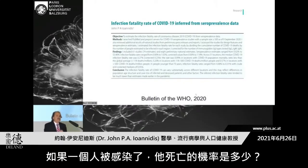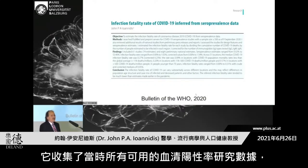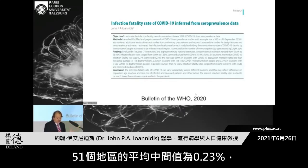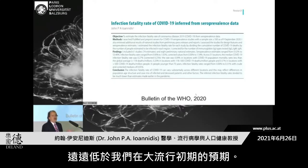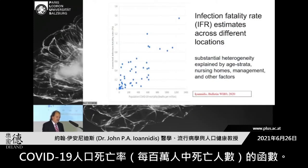Infection fatality rate — what is the chance of dying if someone gets infected? This is a paper that I published about a year ago in the Bulletin of the WHO. It collected data from all available seroprevalence studies done until that time that were close to a general representative population. On average, the median across 51 locations was 0.23%, which was much lower compared to our expectations at the beginning of the pandemic. However, there was large heterogeneity, and I show you here the scatterplot as a function of the population COVID-19 mortality in deaths per million.